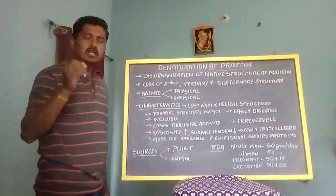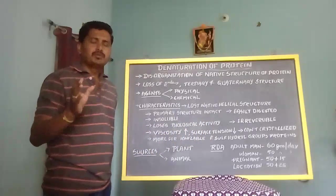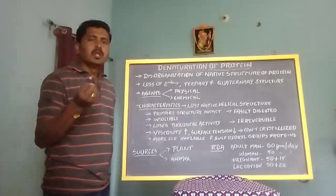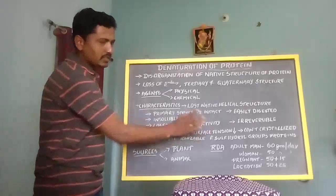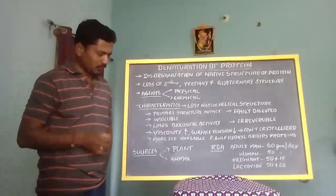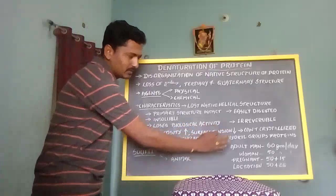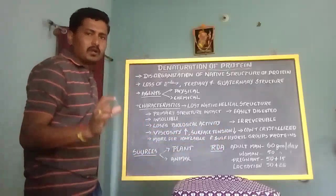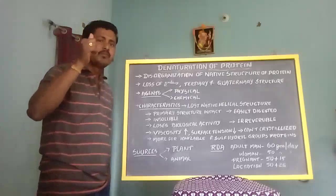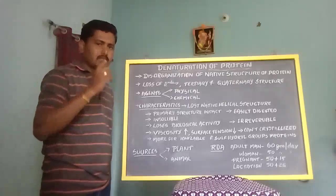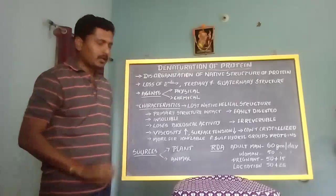The next characteristic is loss of biological activity. After the denaturation process, enzymes lose their catalytic activity and immunoglobulins lose their immune function — that is the loss of biological activity of denatured protein. Additionally, viscosity increases and surface tension decreases after denaturation; the viscosity of the protein increases while the surface tension decreases.